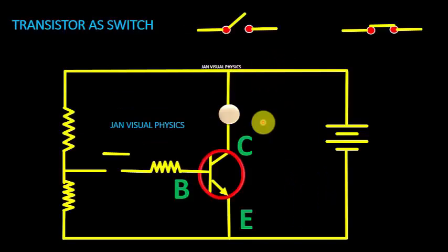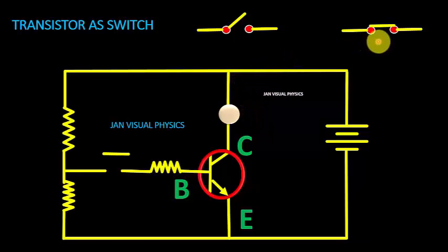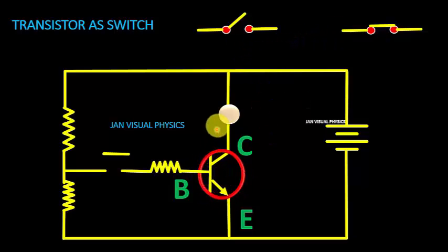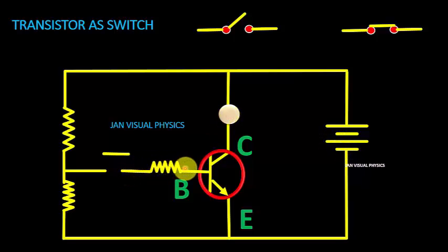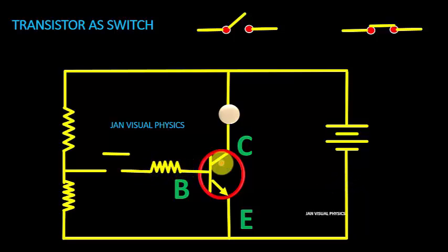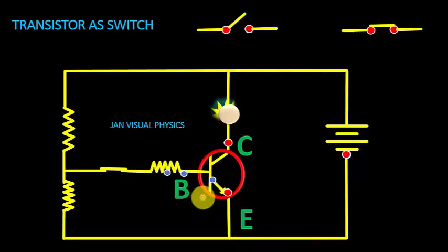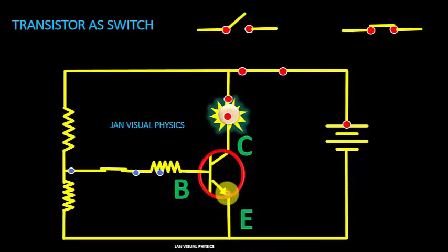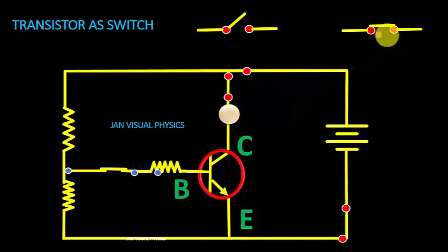Now we see the animated circuit of transistor as a switch. A transistor can behave as an on switch or off switch. This is the transistor, this is the load, and this is the current controlling terminal called the base of the transistor. If we apply a positive signal at the base, the emitter-base junction will become forward biased and the transistor will conduct. In this state, the transistor behaves like an on switch.